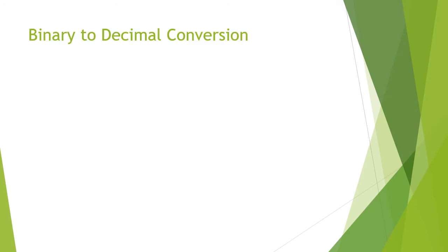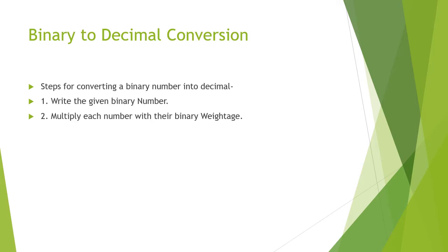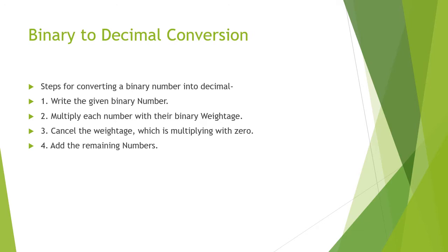Let us start with the binary to decimal conversion. The very first step is to write the given binary number. Then, multiply each digit with its binary weightage — this is very important. Next, cancel the weightages which are multiplied by 0, because 0 multiplied by any value results in 0. Finally, add the remaining values; that sum will be the corresponding decimal number.